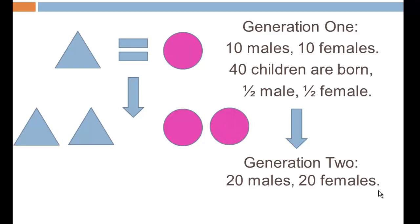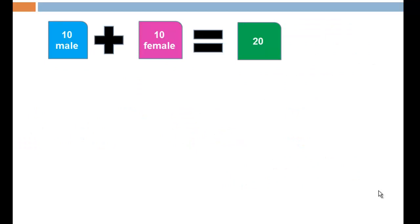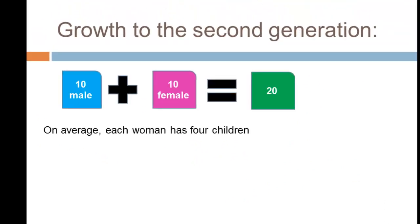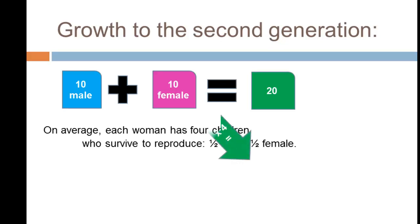The population is doubling from one generation to the next. In the first generation 10 + 10 = 20. Each woman has four children who make it to adulthood, and we assume they all survive to reproduce and their offspring are half male and half female.